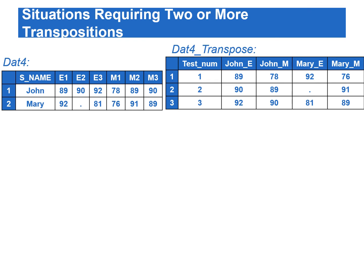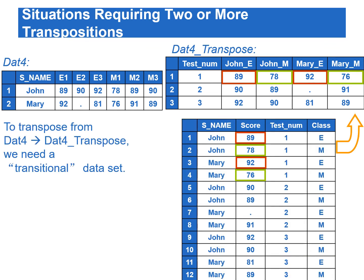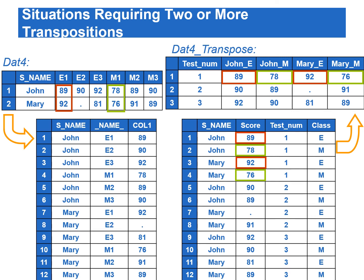In some applications, simply transposing data once will not produce the desired results. For example, to transpose DAT4 to DAT4_transpose, we need to use PROC TRANSPOSE twice. To create this transposed data, we first need to create a transitional data set. We then transpose this transitional data set using testNOM as the BY variable. To create the transitional data set, we first transpose the input data using S_name as the BY variable, then sort the resulting data by testNOM and S_name. The testNOM variable is created by extracting the last character from the _name_ variable.